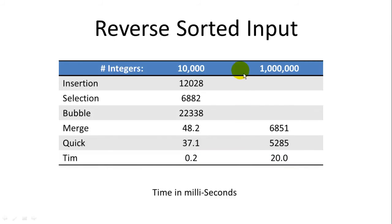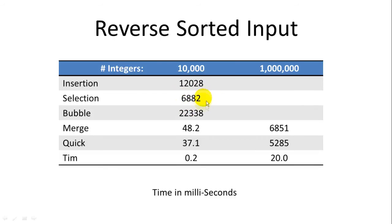With reverse sorted input — that is, input in descending order that needs to be put in ascending order — insertion and bubble sort slow down quite a bit compared to their typical times of about 6 seconds for insertion and 15 seconds for bubble. Merge sort and quick sort perform very similarly to the unsorted or already sorted data, and quick sort is again outperforming merge sort. This is the only test where selection sort beats insertion sort, and by a pretty good margin.